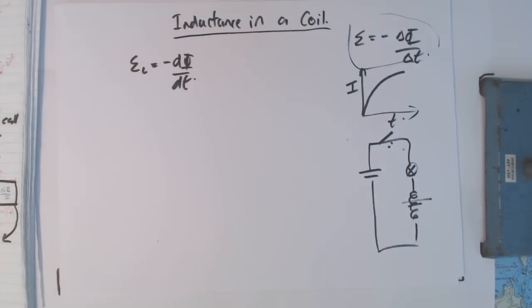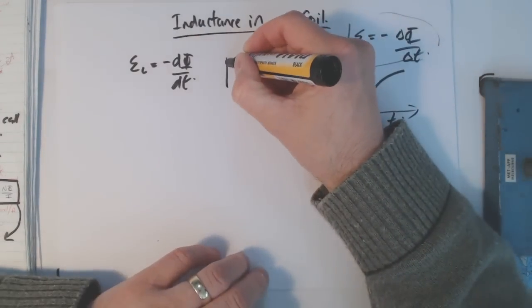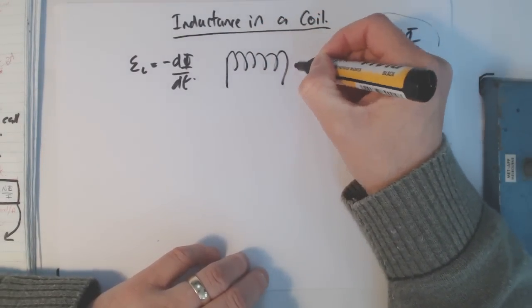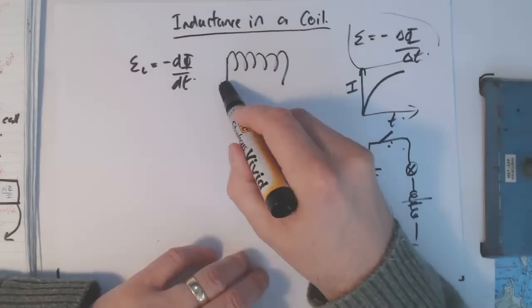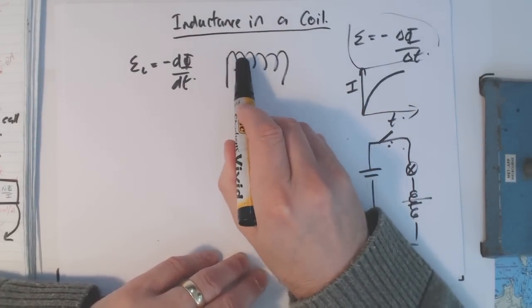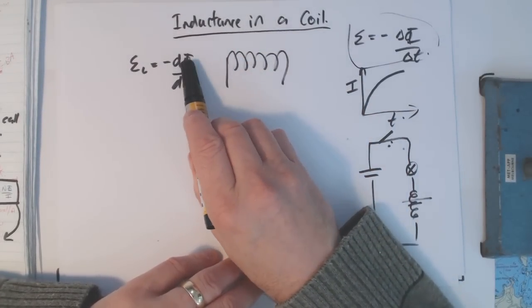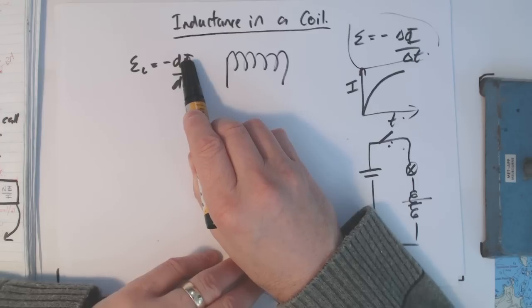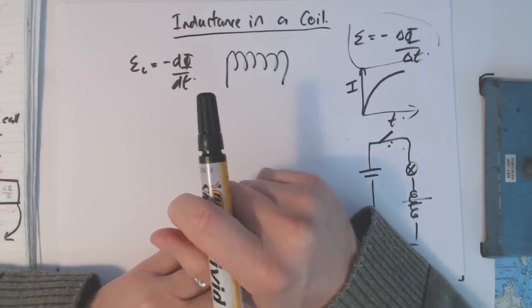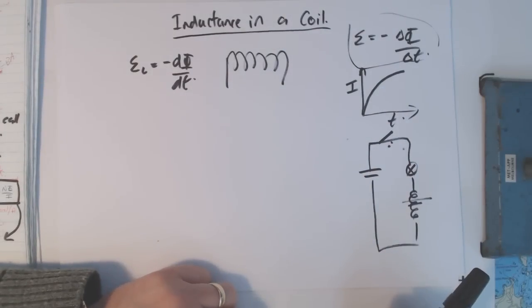When a current flows, it produces a magnetic field. Remember we're talking about a coil here. When current flows through that wire, we get a magnetic field inside the coil. The magnetic field times the area is the flux. But ultimately, the only thing that's changing that we can relate this to is the current.